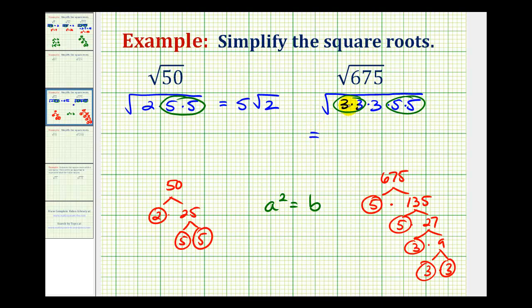So notice how the square root of 3 times 3 is 3. The square root of 5 times 5 is 5. So these will be outside the square root because they simplify. And then we're left with the square root of 3. So this would be 15 square root 3.